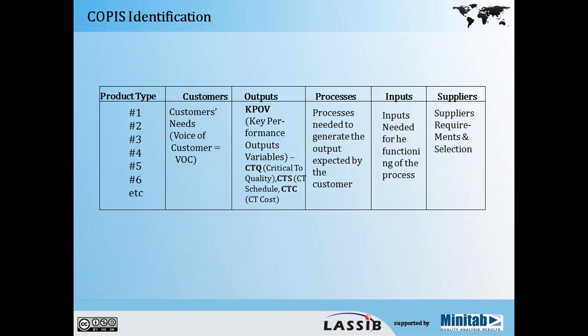Ideally, you should do Corpus for each and every product type that you have. Going back to the coffee shop example: as product types, I might broadly classify into hot coffees, cold coffees, and eating things that go along — like sandwiches, burgers, chips. So overall I would have probably three product categories. For each one of these, the customers would be different and each customer would have a different set of outputs.